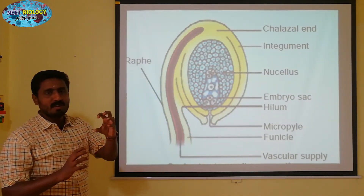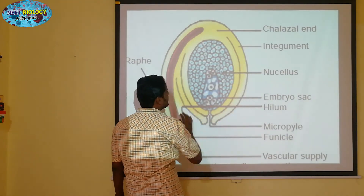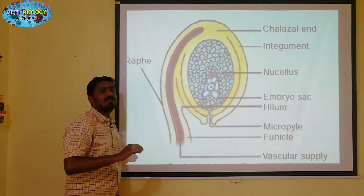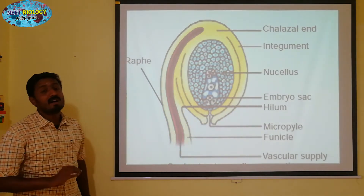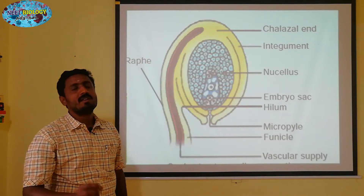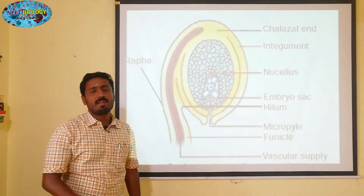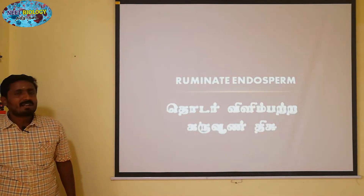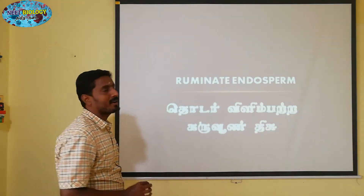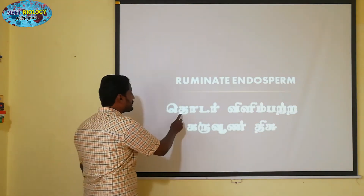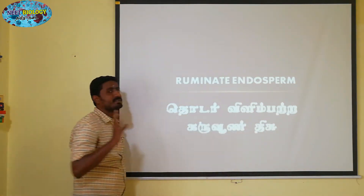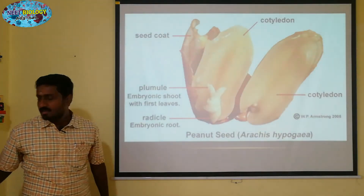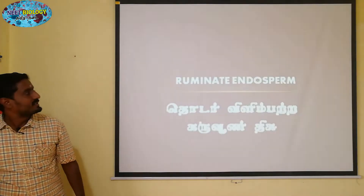If you want to look at the endosperm, you can see the endosperm — it is the size of the endosperm. The endosperm is the name of the ruminate endosperm. If you have studied the ruminate endosperm in Tamil, you will have a great idea. This is related to the seed region.